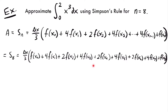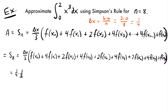To proceed with this calculation, we need to know what delta x is. Delta x is the width of our subintervals, and delta x equals b minus a divided by n. We know n is 8. b and a come from the integral from a to b — we have an integral from 0 to 2, so a equals 0 and b equals 2. Therefore delta x equals 2 minus 0 divided by 8, which equals 1/4. We can rewrite delta x divided by 3 as 1/4 times 1/3.